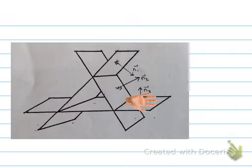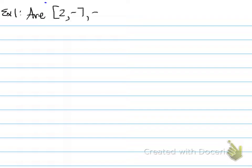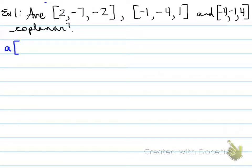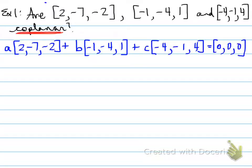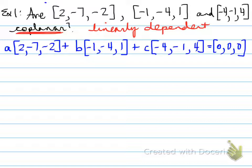Back to the previous question. Let's look at an example: are three given vectors coplanar? Do they span across a plane? Do they lie on the same plane? Coplanar means are these vectors linearly dependent? We can set it up so that vector one plus vector two plus vector three equals zero. Another way to ask this: can two of them be written as a linear combination of the third?